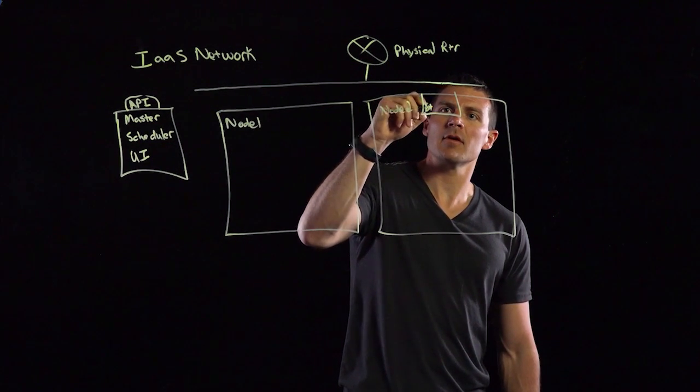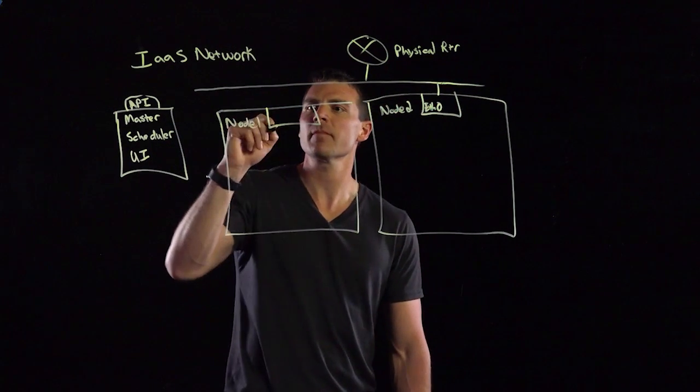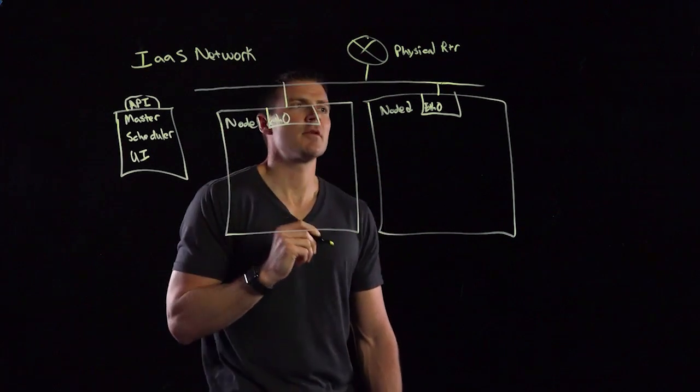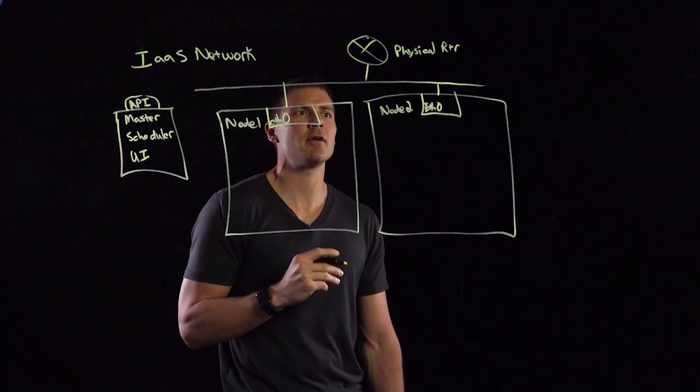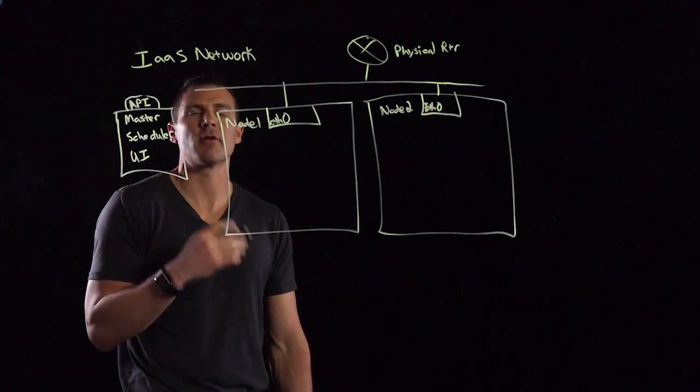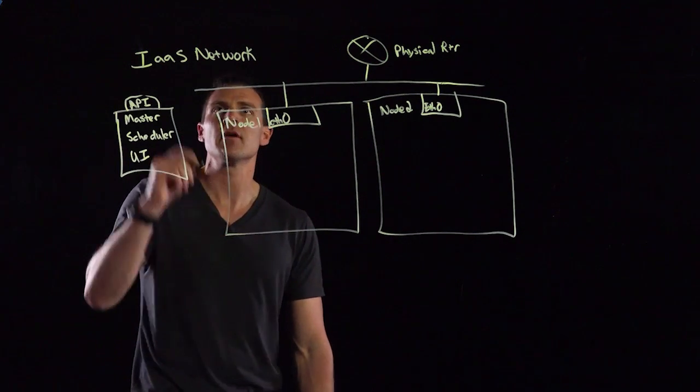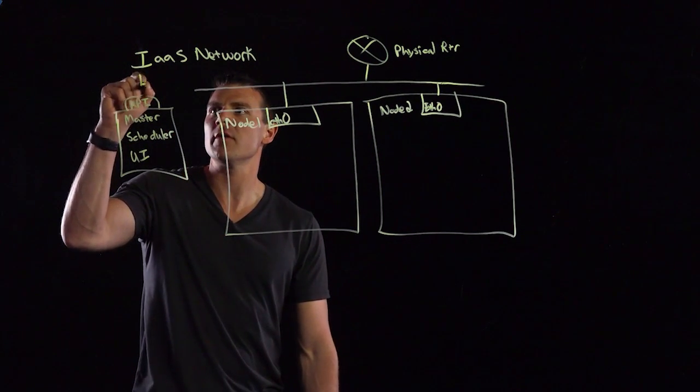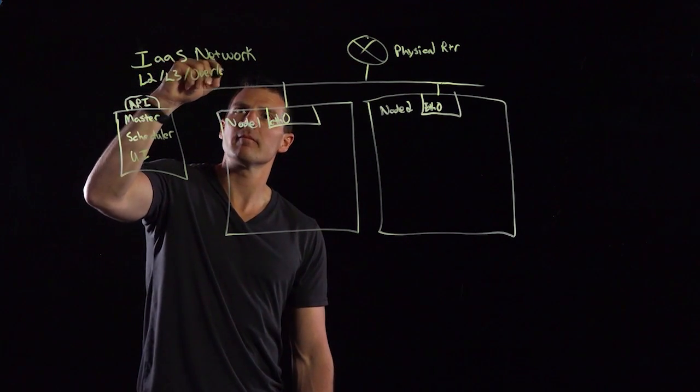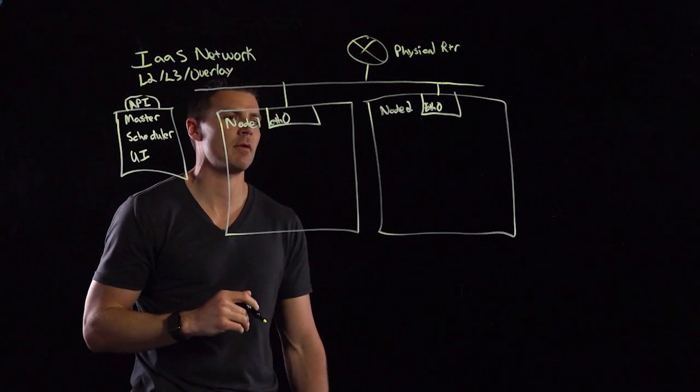These nodes have Ethernet 0 attached to them. This can be physical or virtual. We'll connect these nodes to the infrastructure network. The requirement here for a node network, or IaaS network, is all nodes within the cluster have connectivity. This connectivity can be via L2, L3, or an overlay, just so as long as they can communicate among each other.